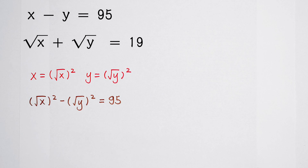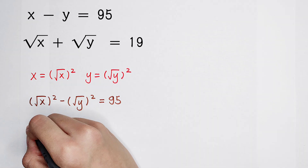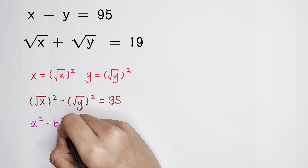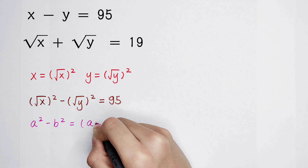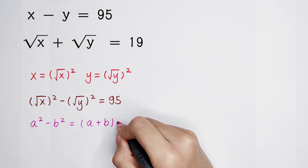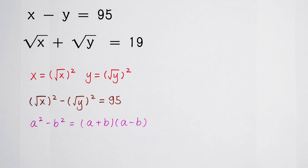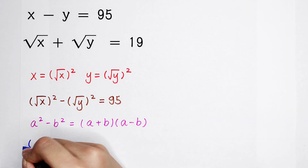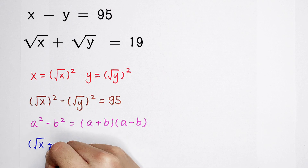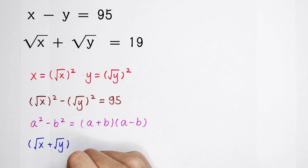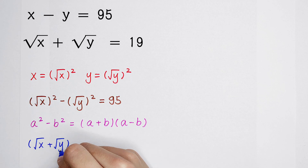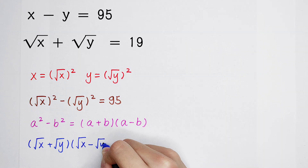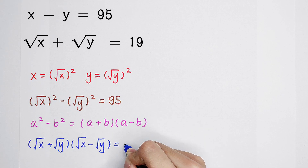So now we use a formula — the third binomial formula. The third binomial formula states that a squared minus b squared equals (a plus b) times (a minus b). We apply this formula here, where square root of x is a and square root of y is b. So we get: square root of x plus square root of y, times square root of x minus square root of y, equals 95. You can also write square root of x minus square root of y first — both are okay.